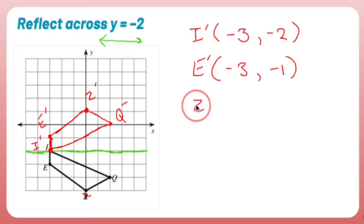Z prime is going to be: start at the origin, go nowhere left or right, and up 1. So Z prime is 0, positive 1.